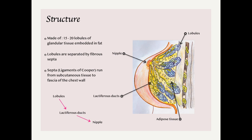These septa are called ligaments of Cooper. Each lobule drains by its lactiferous duct onto the tip of the nipple, which is a projection just below the center of the breast and is surrounded by an area of pigmented skin, the areola.